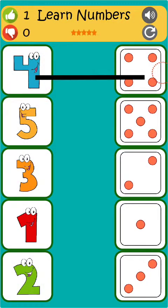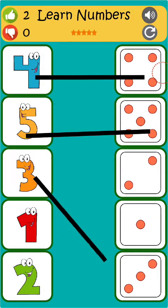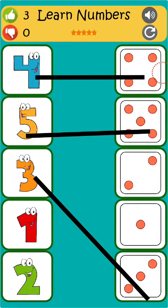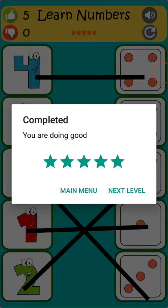F-O-U-R, four. F-I-V-E, five. T-H-R-E-E, three. O-N-E, one. T-W-O, two.